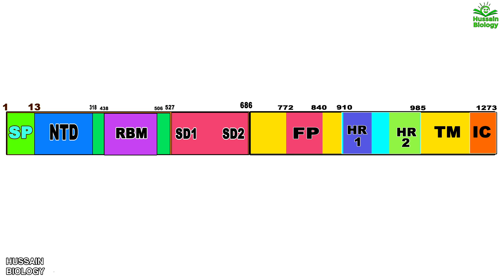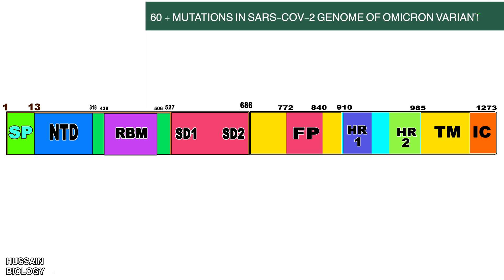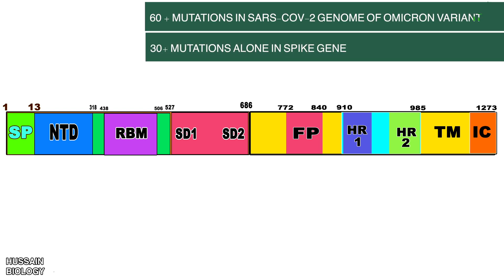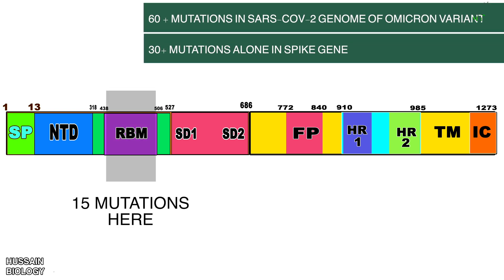To date there have been 60-plus mutations reported from the Omicron genome. Of those, there are almost 30-plus mutations reported in the S gene of the Omicron variant, which is the highest in any variant as of now. Of those 30-plus S gene mutations, 15 are on the receptor binding domain region.